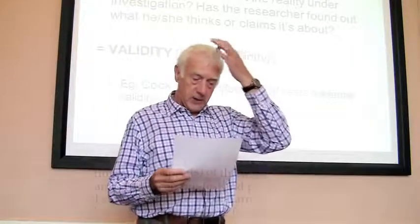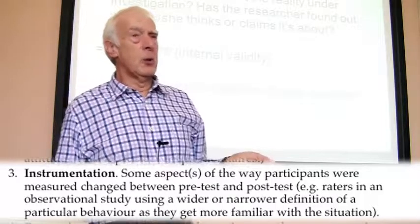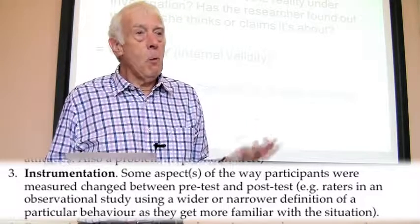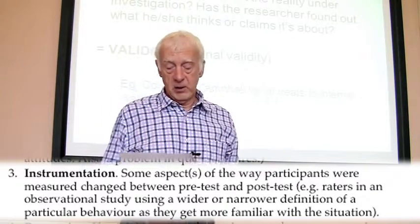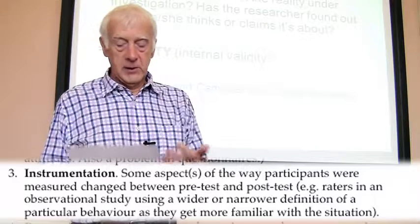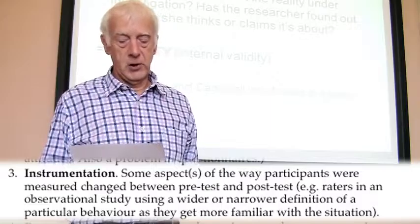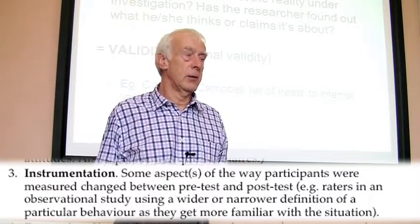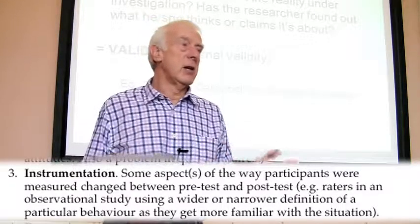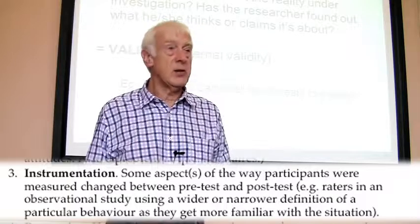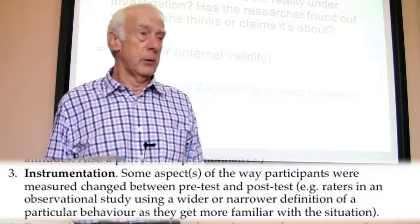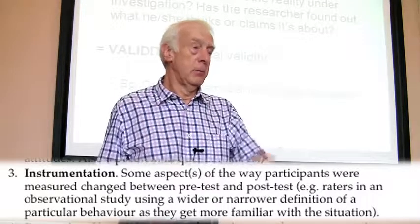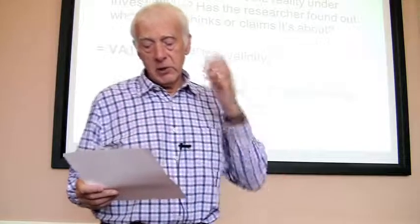Number three is instrumentation problems. In social sciences we refer to things like questionnaires as instruments. The problem is when some aspect of the way participants are measured has changed between pre- and post-tests — for example, an observational study using a wider or narrower definition of a particular behaviour. A shift in the criteria researchers apply means differences found reflect inconsistent measurement rather than real differences in behaviour.